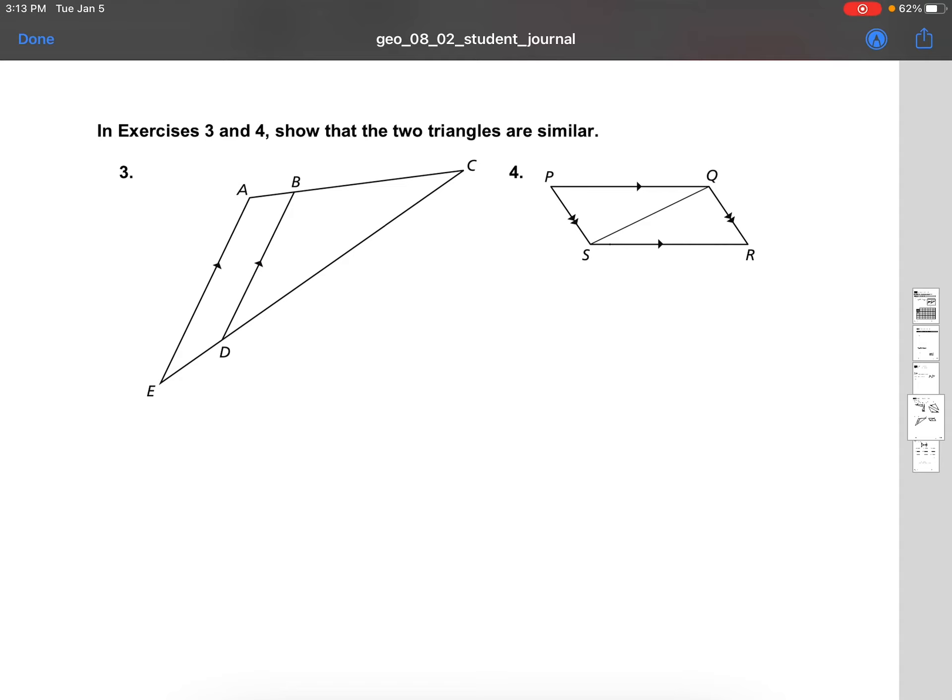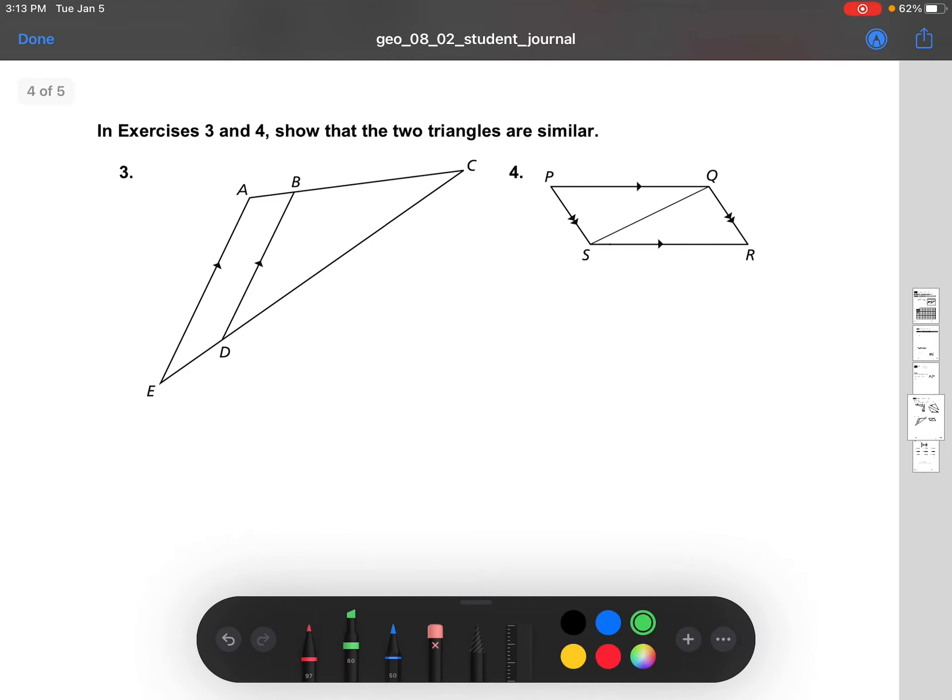where we're studying similar triangles. So here, question number 3 and 4, we want to show or prove that the two triangles are similar. So remember, similar means that they have the same shape, but different sizes. And the way that we can prove it is by finding two pairs of congruent angles.